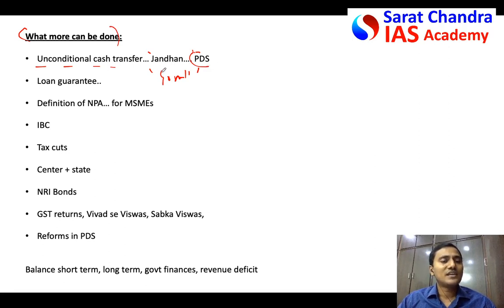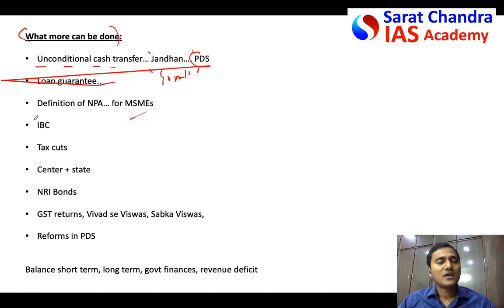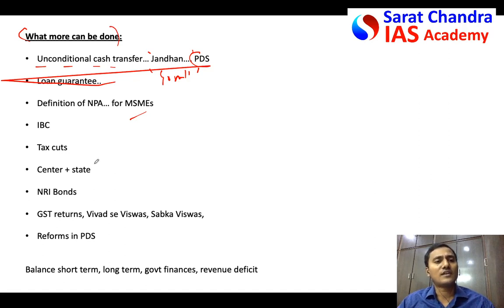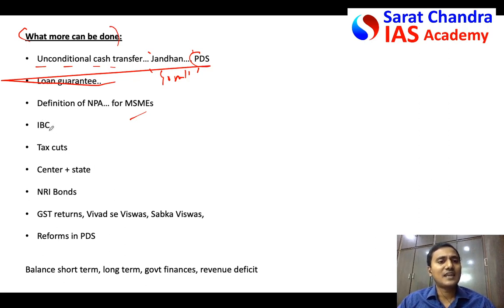The definition of Non-Performing Assets should be changed. Currently, NPAs are loans that could not repay interest or principal for up to 90 days. This 90-day period has to be extended — perhaps to 120 or 140 days — so that MSMEs can get relief. Similarly, the Insolvency and Bankruptcy Code has a limit: if any MSME cannot repay up to 1 lakh rupees, the insolvency process begins. This limit has to be increased.